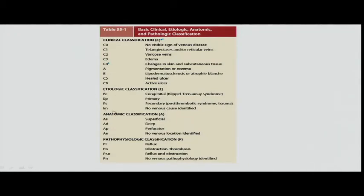Etiologic classification: virtually nobody does pediatric venous work, so it's usually primary. Secondary is post-thrombotic syndrome — people who had a DVT, it went away, and now their veins don't work because the valves got obliterated. Anatomic classification is what we were just talking about: superficial, deep, or perforator. Besides having a clot, you can have reflux in the superficial, deep, or perforator system, and that determines what you can do to fix it.